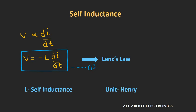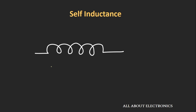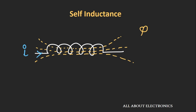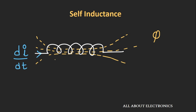Now let's find the expression for this inductance in terms of magnetic flux. Let's say we have one coil, and current I is flowing through it. Because of this current flow, there will be a generation of magnetic flux φ. If the current flowing through this coil is time varying, then the magnetic flux generated will also be time varying.